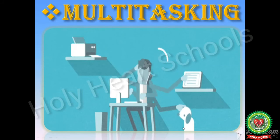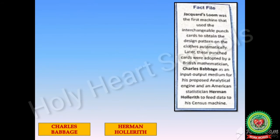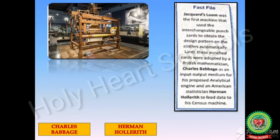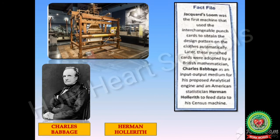Now let's discuss some side questions given on page number 11. Jacquard's loom was the first machine that used interchangeable punch cards to obtain a design pattern on clothes automatically. Later, these punch cards were adopted by British mathematician Charles Babbage as an input-output medium for his proposed analytical engine, and by American statistician Herman Hollerith to feed data to his census machine.